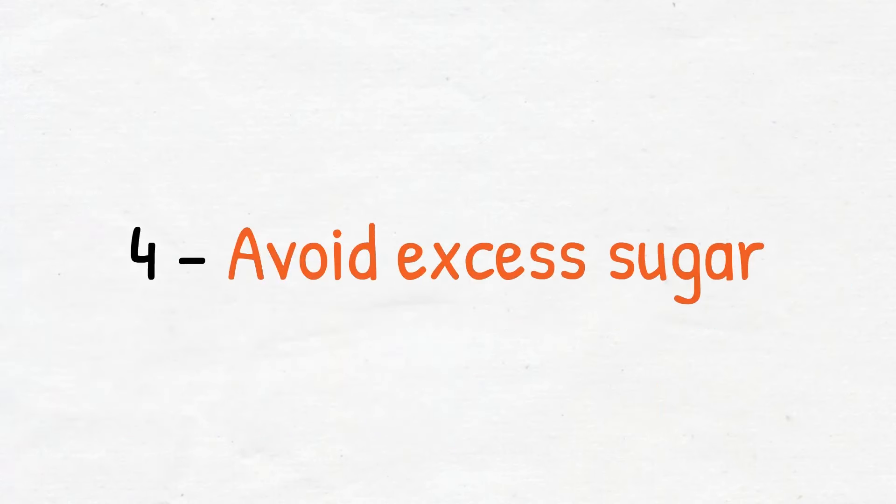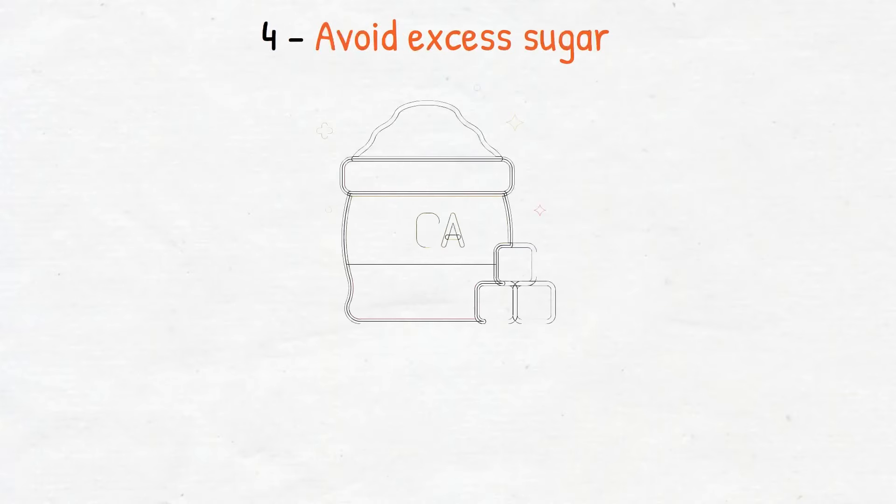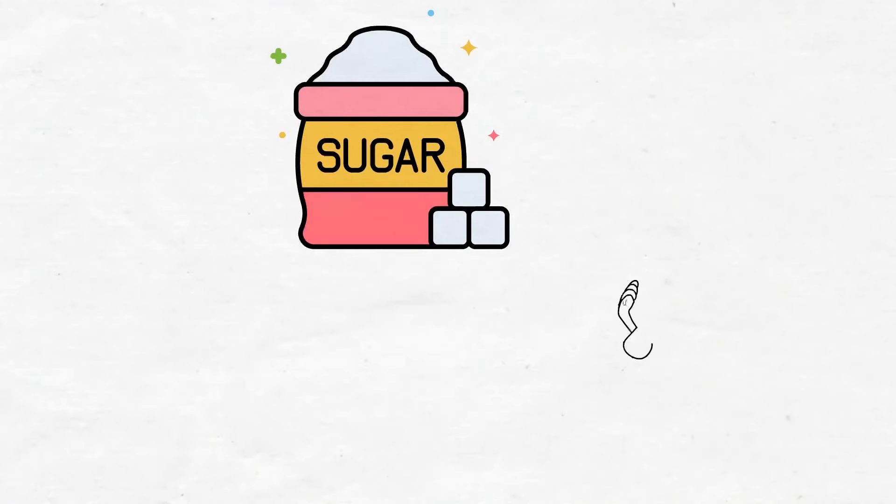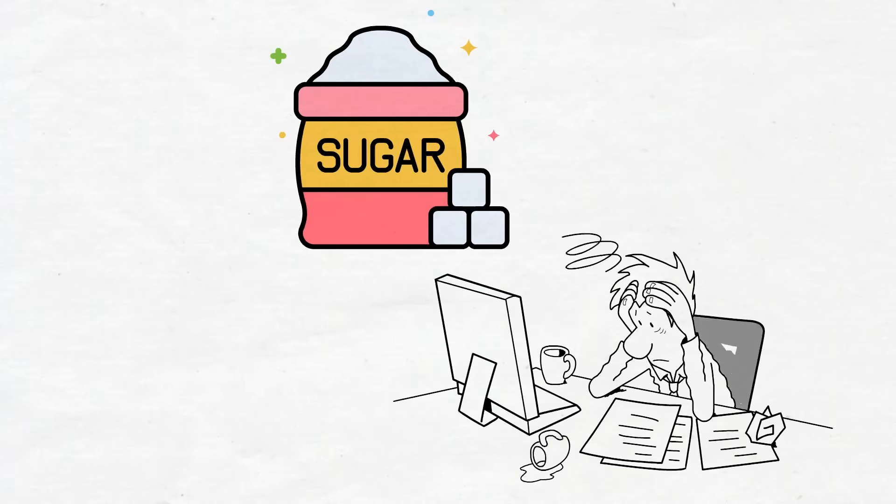Number four, avoid excess sugar. Research has shown that excess sugar depresses immunity, causes attention disorders, increases the output of stress hormones, and promotes obesity, type 2 diabetes, and heart disease.